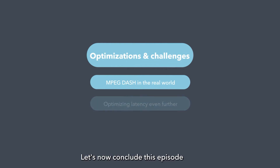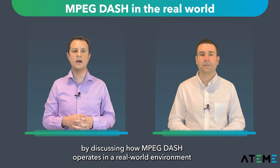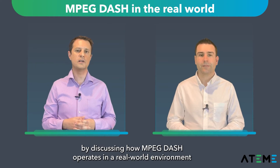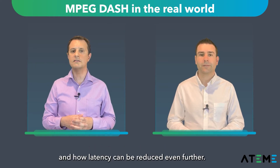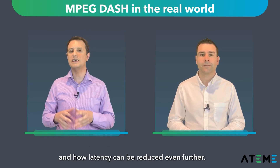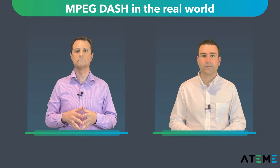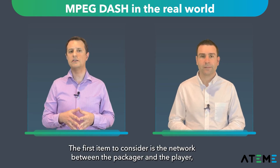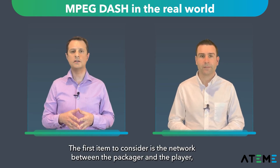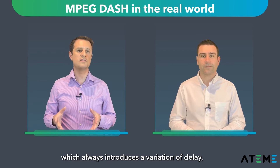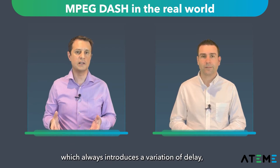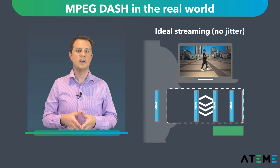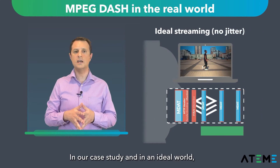Let's now conclude this episode by discussing how MPEG-DASH operates in a real-world environment and how latency can be reduced even further. The first item to consider is the network between the packager and the player, which always introduces a variation of delay, also known as network jitter. In our case study,